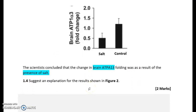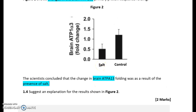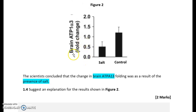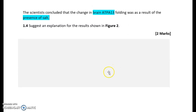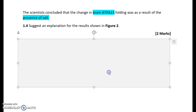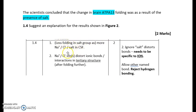To explain the results in figure two: as a result of salt, there will be more sodium and chloride ions in the cerebrospinal fluid. This is fundamentally a question about how distortions happen to protein structure. The sodium and chloride ions distort the ionic bonds or interactions in the tertiary structure - not the secondary structure, because secondary structure only involves hydrogen bonds, which sodium and chloride ions do not affect. So the ions affect the tertiary structure, causing less folding. You can mention disulfide bonds, but reject hydrogen bonds as that would be incorrect.